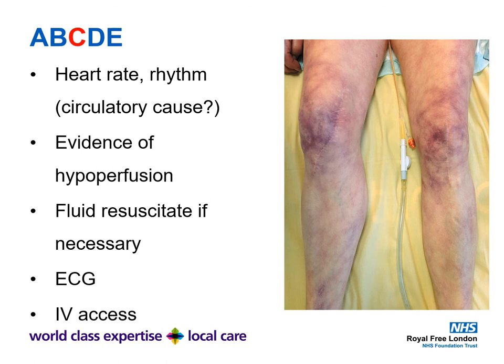Looking at the circulatory system: heart rate and rhythm — is there a circulatory cause for reduced level of consciousness? Are they in a low output state, for example cardiogenic shock, massive myocardial infarction, or massive pulmonary embolism? Is there any evidence of hypoperfusion — capillary refill time, how do the extremities feel, is there any mottling? Mottled legs are usually a terminal sign in those who are unstable. Do an ECG to check for ST elevation MI, fast AF, SVT, or VT, and then insert IV access and take the necessary blood tests.